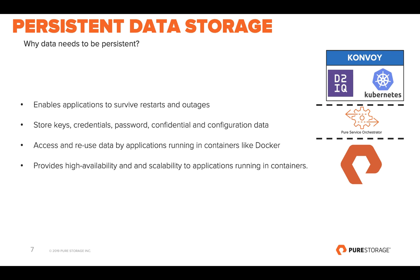For HA to work, if a container points to a particular shared data location and one container goes down, another container is still up and running because it still points to the same shared data set, allowing your business to continue while you bring the other container back up. Kubernetes manages resources and spins up containers automatically — having persistent storage underneath means you don't lose the data generated while the application was running when the container comes back online.